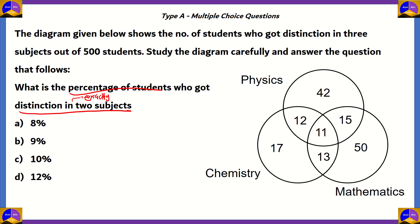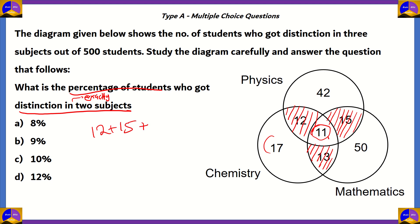Looking at the Venn diagram, the regions representing exactly 2 subjects are three overlapping areas. The center region represents all 3 subjects, which is not what is being asked. The values 17, 42, and 50 represent Chemistry, Physics, and Mathematics only (each subject alone). The total number of students who got distinction in exactly 2 subjects would be 12 plus 15 plus 13.